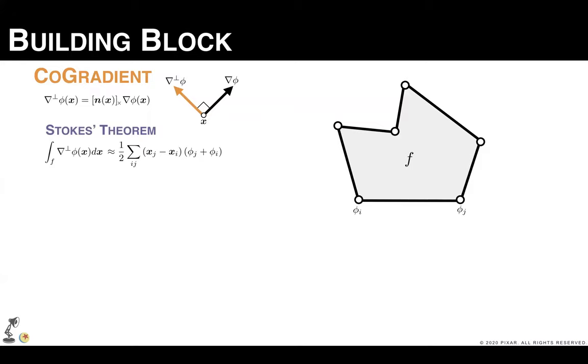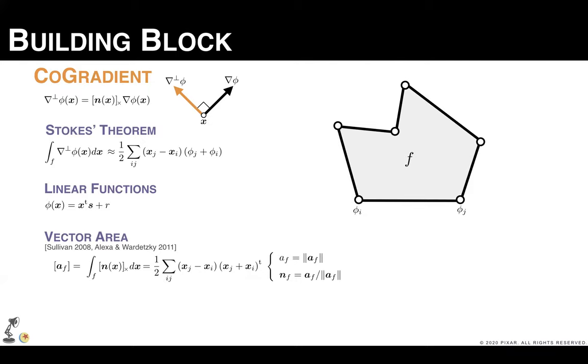Discretizing this boundary integral over a polygonal face f, we obtain an approximation of the co-gradient operator, which is exact for linear functions. Since a linear function has a constant gradient, we can also relate our boundary integral to the integral of the normal vector over the polygon, even though we have no knowledge about the surface fitting the interior of the polygon. This integrated normal is a known quantity called the vector area, and it provides a well-defined notion of area and normal for any 3D polygon.